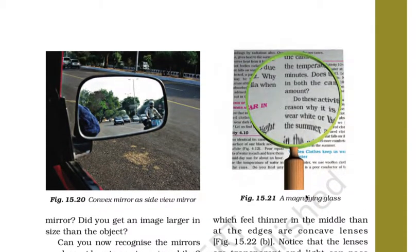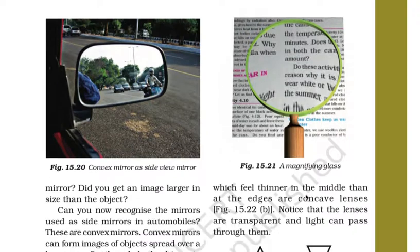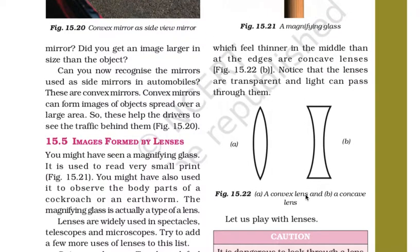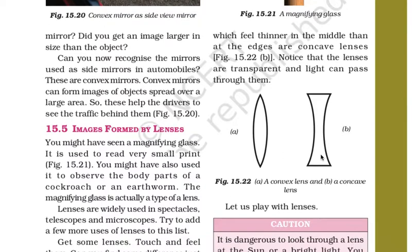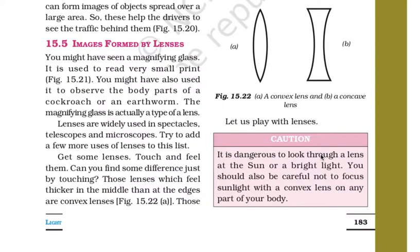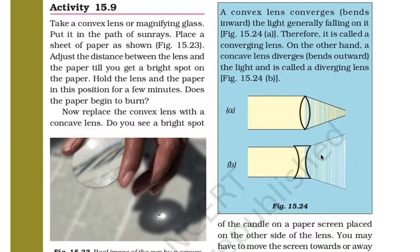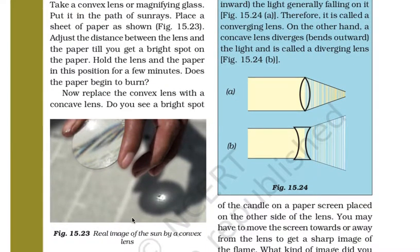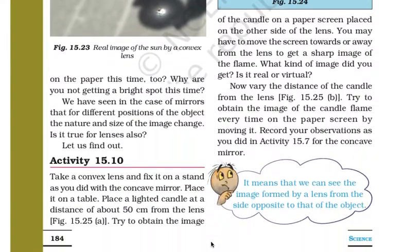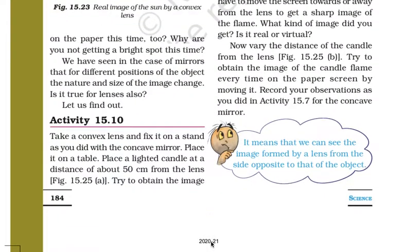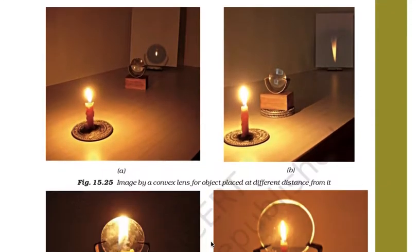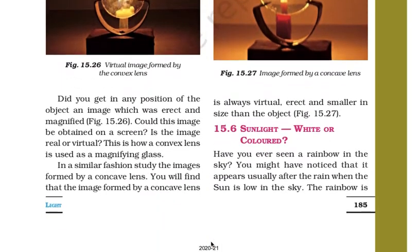Here is one more activity: forming a real image of the sun using a convex lens. This whole page is filled with the activity.